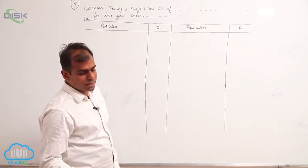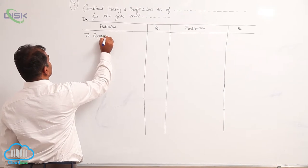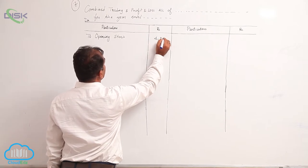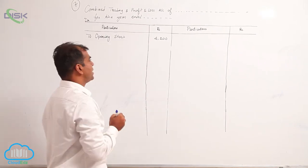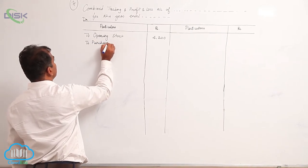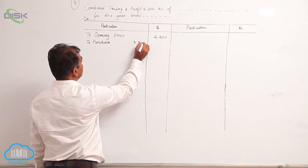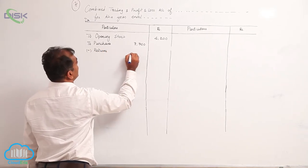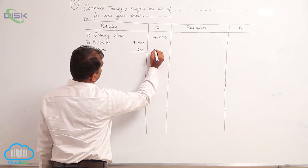Let us start with the trading account. Opening stock of 4200 goes on the debit side of the trading account. The next item is purchases. Since there are purchase returns, take purchases in the inner column — rupees 7700 — then minus purchase returns of 200. The net purchases of 7500 go in the outer column.